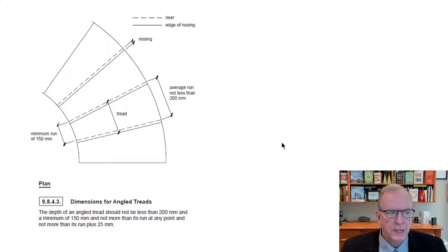If we have circular stairs, we have certain requirements as well. A minimum run on the inside radius of the stringer would be 150 millimeters. The average run, not less than 200 millimeters. So if you're taking it at the outer and the inner, you're adding them together, dividing it by two, the average should not be less than 200 millimeters. And then now you're talking about nosings.